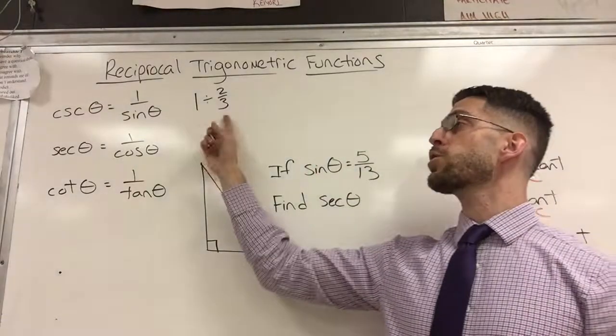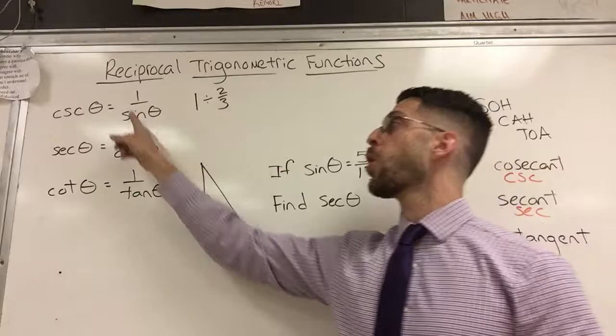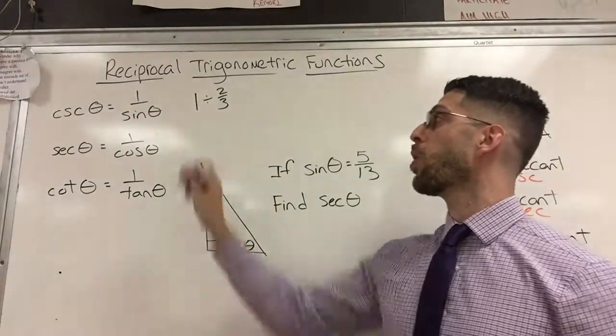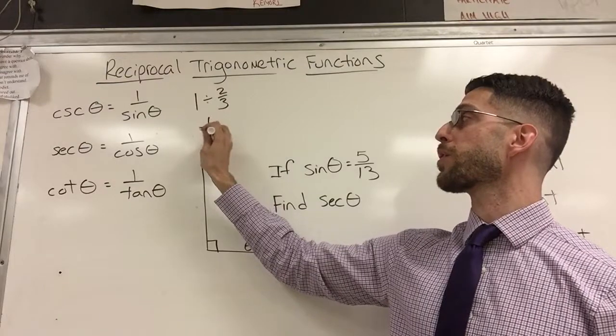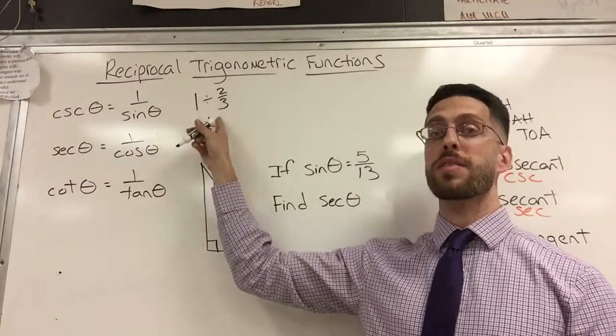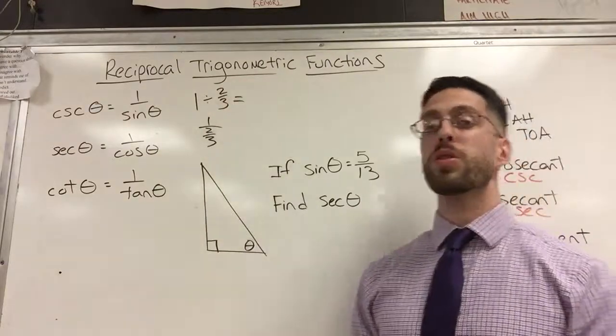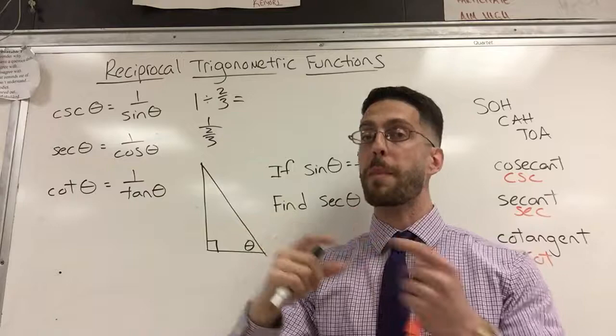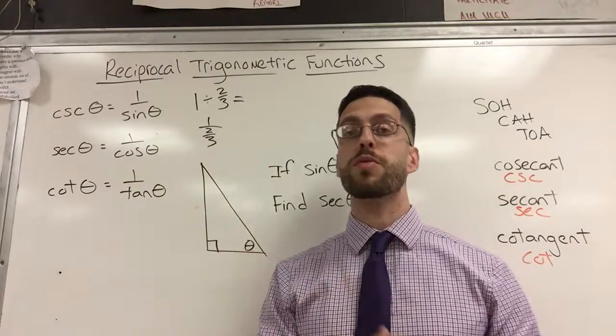So just to illustrate my point even further, one over something. So think about one over two thirds. One over something really means one divided by that something. And if you learned way back when you're dividing fractions, you actually multiply by the reciprocal. I call that keep change flip.